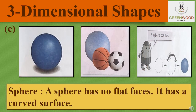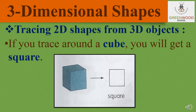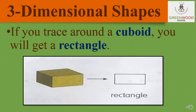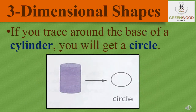The fifth one is sphere. A sphere has no flat faces — it has only a curved surface. As it is made up of a curved surface, it can completely roll. Tracing 2D shapes from 3D objects: as you can see in the picture, if you trace around a cube, you will get a square. So we can say that a cube is a 3D version of a square. If you trace around the base of a cylinder, you will get a circle.